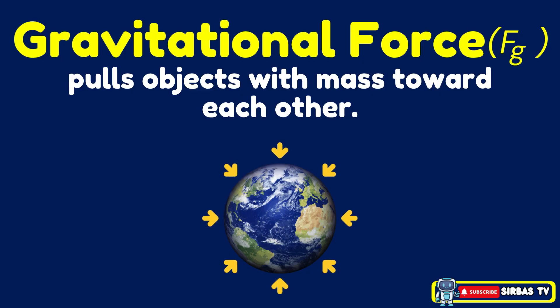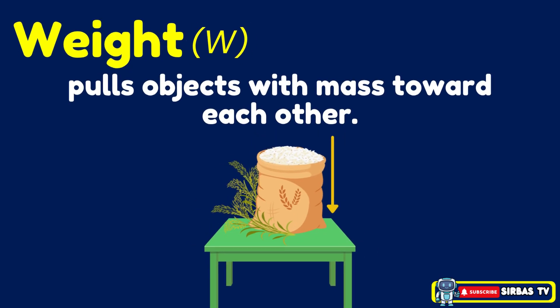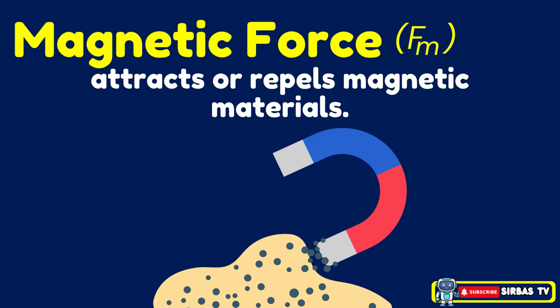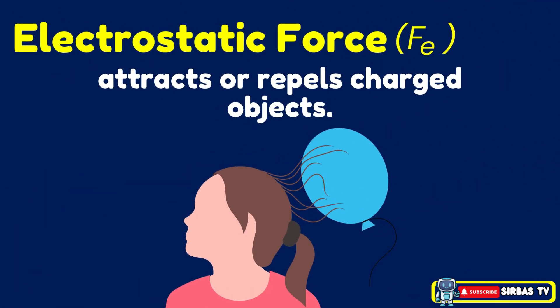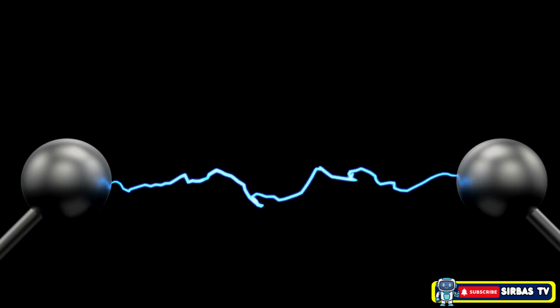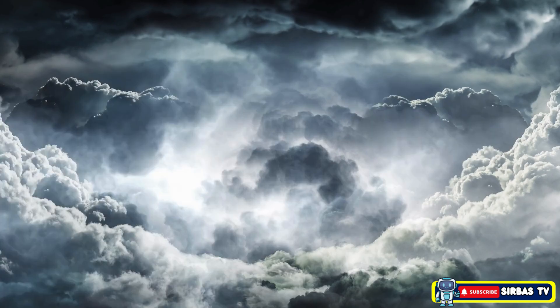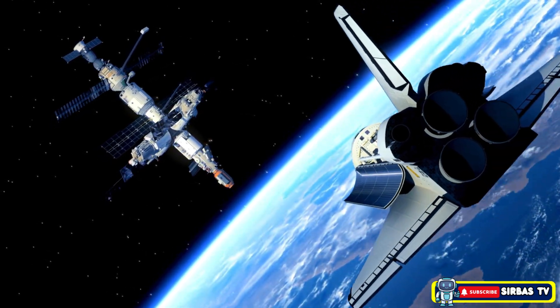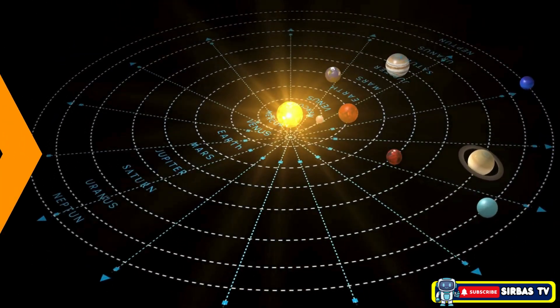In summary: gravitational force pulls objects with mass toward each other; weight is the gravitational pull on an object's mass; magnetic force attracts or repels magnetic materials; and electrostatic force attracts or repels charged objects. Non-contact forces are all around us — pulling, pushing, and influencing motion even when we cannot see them.